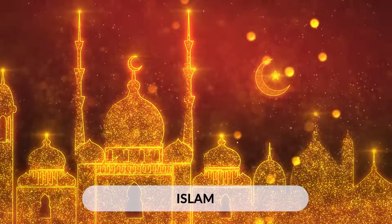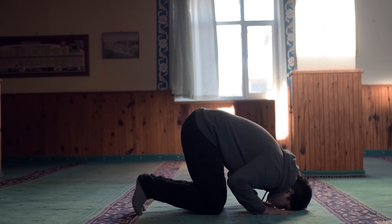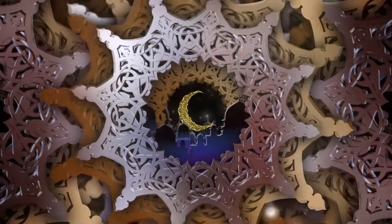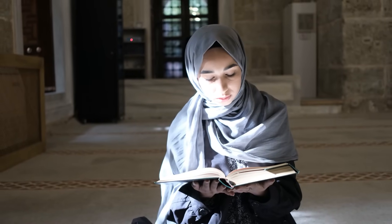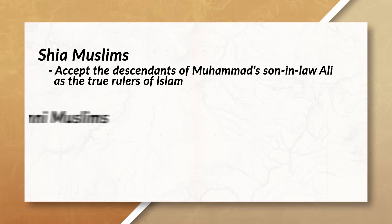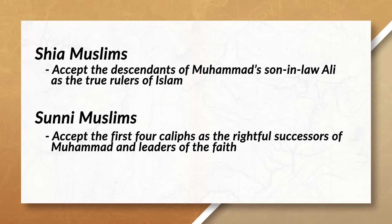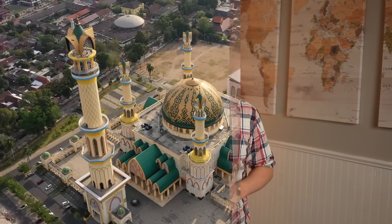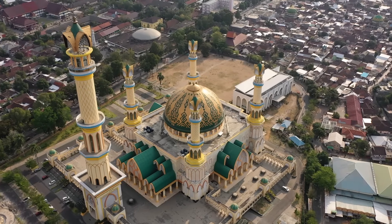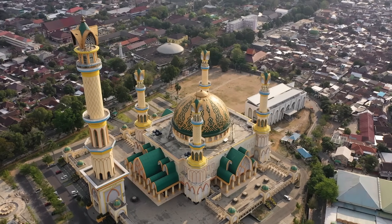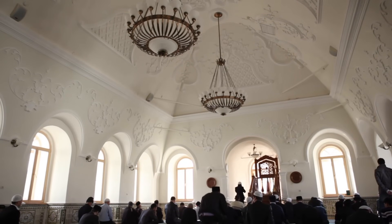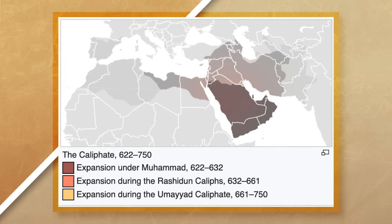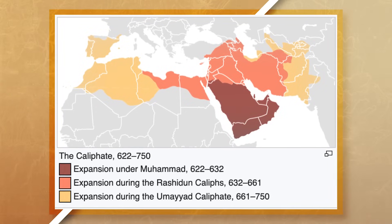Another Abrahamic universalizing religion is Islam, with its hearth in the Eastern Mediterranean. Islam is monotheistic and is traced back to a single founder, Muhammad. After Muhammad passed, the faith split between the Shia and the Sunni over who should lead the faith. Both use the Quran as their holy book and follow the five pillars of Islam. The Shia accept descendants of Muhammad's son-in-law Ali as true rulers, while the Sunnis wanted Muhammad's successor chosen by a community of followers. Islam diffused through hierarchical diffusion via Arab traders and missionaries, relocation diffusion through migration, and also through trade and war as the Islamic empire expanded.